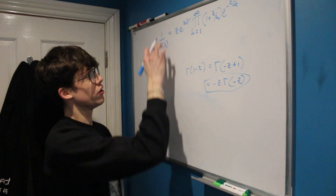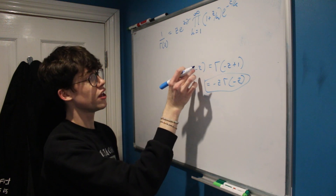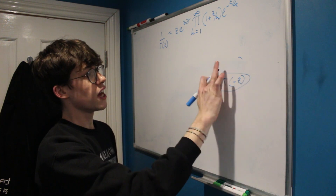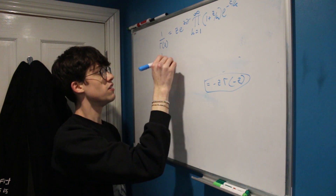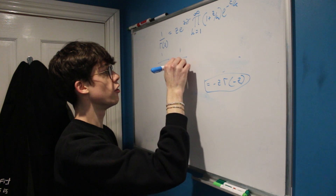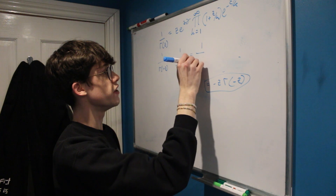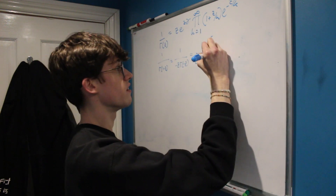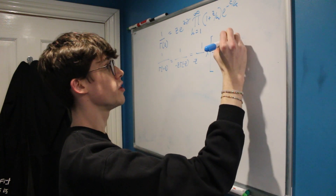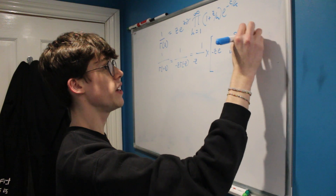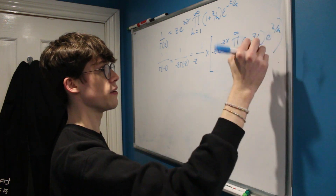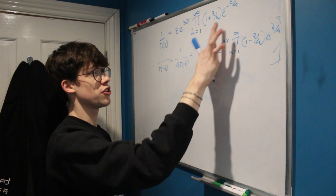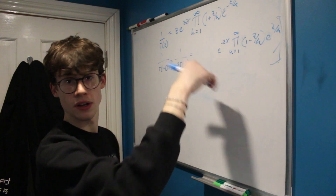This means there is an easier way to find 1 over gamma of 1 minus z. So 1 over gamma of 1 minus z equals 1 over negative z times gamma of negative z, which equals negative z times e to the negative z times the Euler-Mascheroni constant, times the product from 1 to infinity of 1 minus z over k times e to the z over k. The negative z terms cancel, leaving e to the negative z Euler-Mascheroni constant times that infinite product.